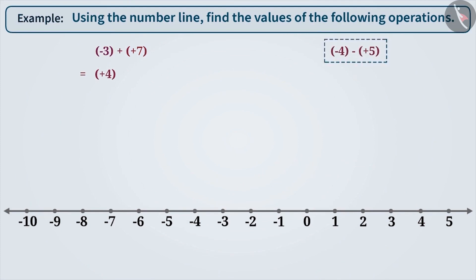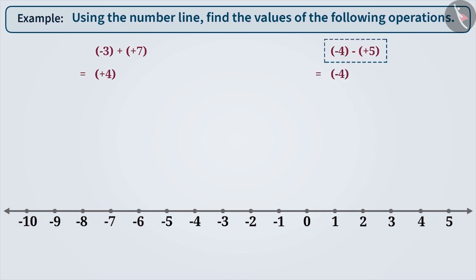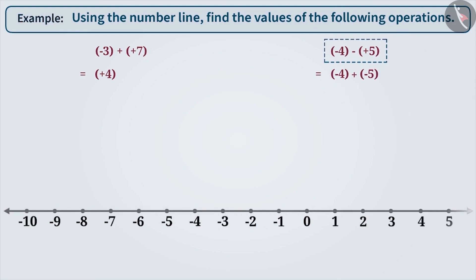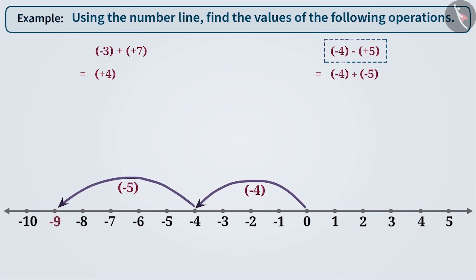To subtract minus 4 and plus 5, first convert subtraction into addition. In order to do this, keep the first integer as it is and write the addition sign in the place of the subtraction sign. Now write the additive inverse of the second integer. The additive inverse of plus 5 is minus 5. Now let's solve this on the number line. Since the first integer is minus 4, move 4 steps towards the left from 0. And since the second integer is minus 5, we move 5 steps towards the left of minus 4 on the number line. Thus, we reach minus 9, which is the result of minus 4 plus minus 5.